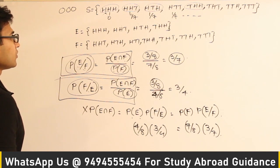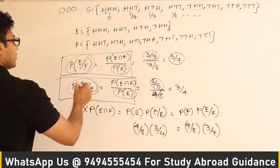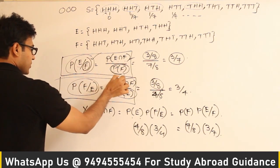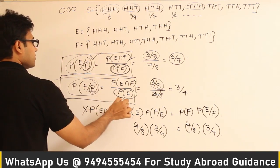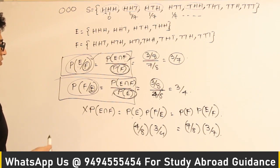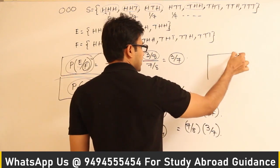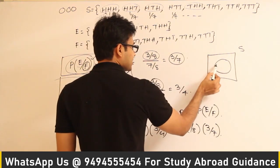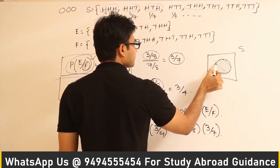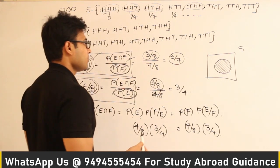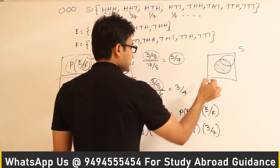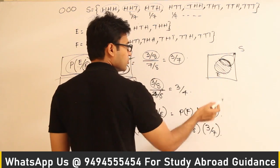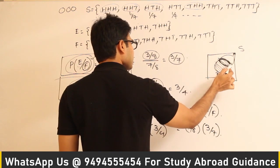To summarize conceptually: what is given forms the new sample space. Originally our sample space has all 8 outcomes. When an event is already known to have happened, the original sample space is boiled down to just that event's outcomes. Then we find the probability of the other event within this reduced sample space.